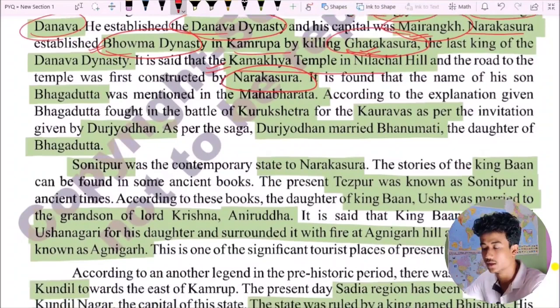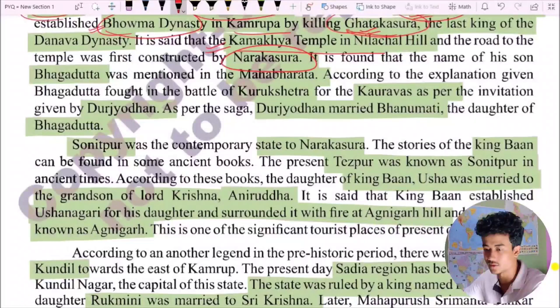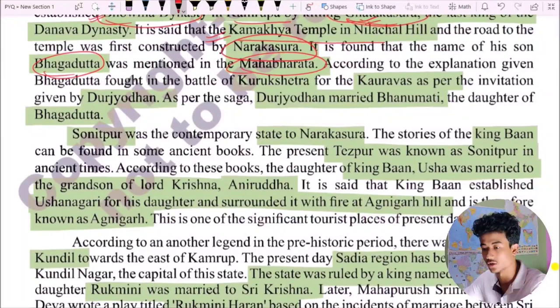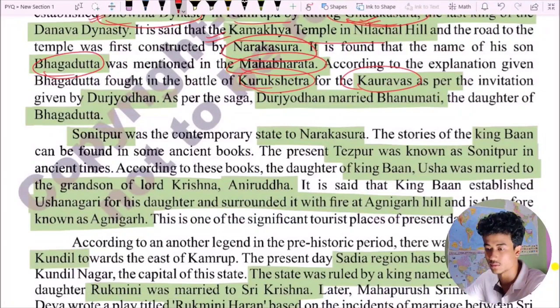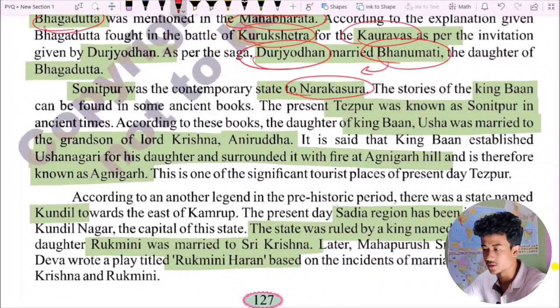It is found that the name of Narakasura's son Bhagadatta was mentioned in the Mahabharata. Bhagadatta participated in the battle of Kurukshetra. His wife's name was Bhanumati. Sunitpur was the contemporary state of Narakasura. The stories of King Bana can be found in some ancient books. The present Tezpur was known as Sunitpur.